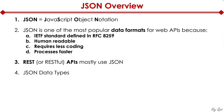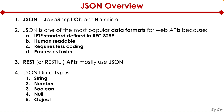To understand JSON, the key thing is understanding the different data types it supports. If you have a software development background you'll recognize these, and even if you don't, just hang in there. The six data types that JSON supports are: string, number, boolean, null, object, and array.